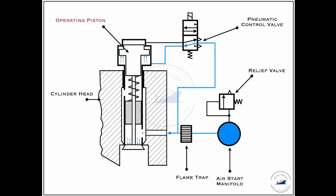That means when the pneumatic control valve is ensuring that the air supply is underneath the operating piston, the air pressure pushes the operating piston upwards and keeps the starting air valve in a closed condition.